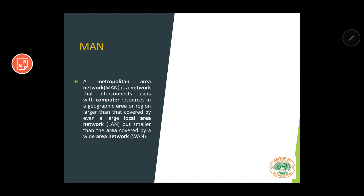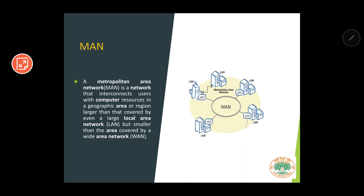The next type is MAN, also known as Metropolitan Area Network. A MAN is a network that interconnects users with computer resources in a geographic area larger than that covered by a large LAN but smaller than a Wide Area Network. For example, if you want to connect all computers across the city of Chennai, you would use MAN. The range of MAN is greater compared to LAN. This is a typical example of a MAN.